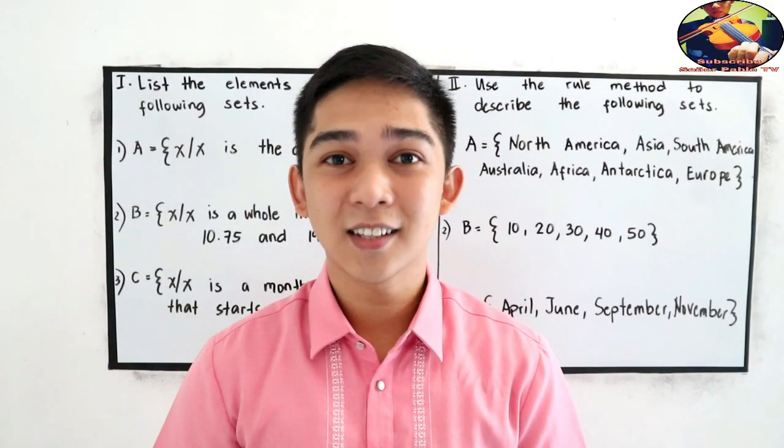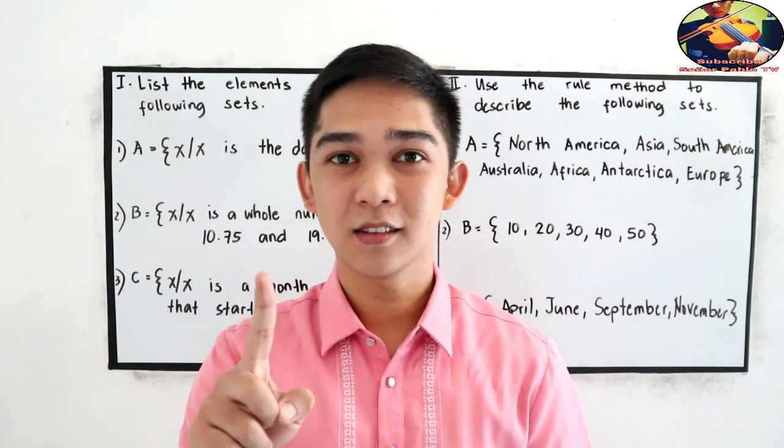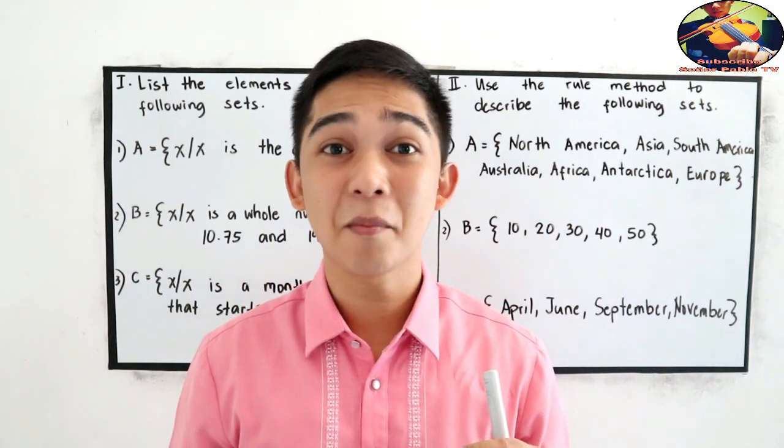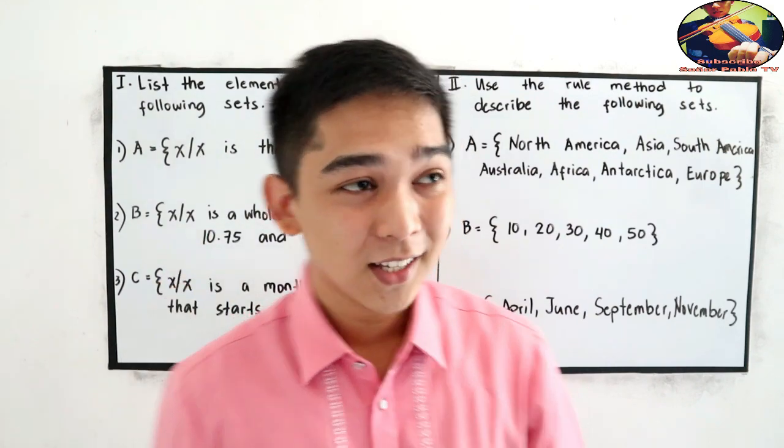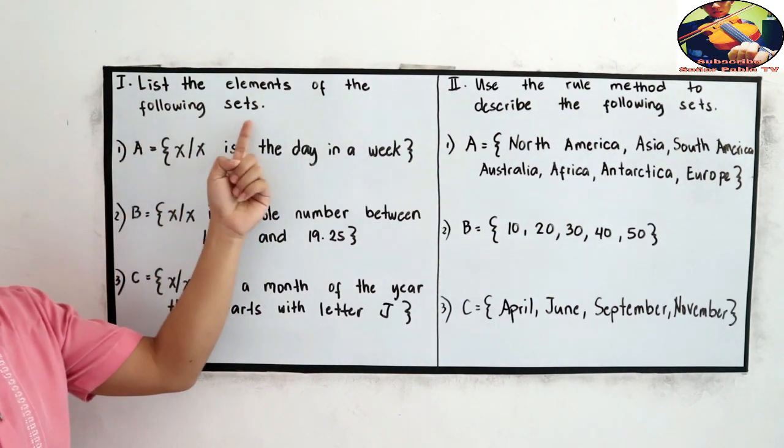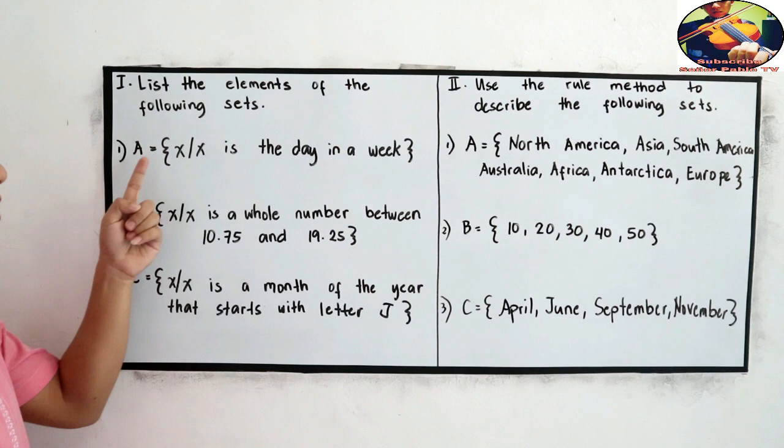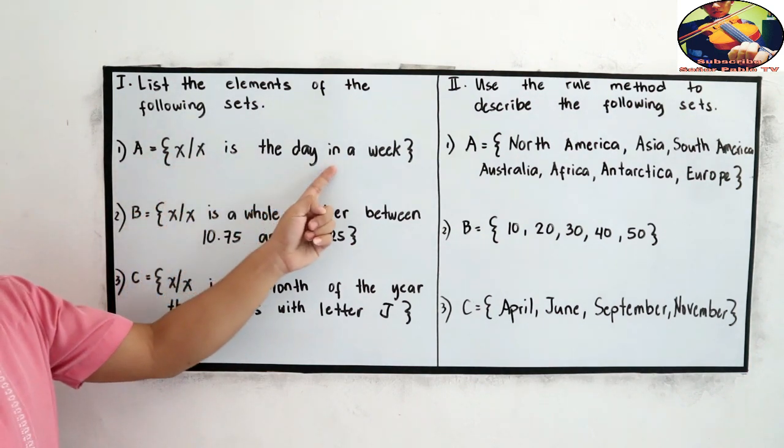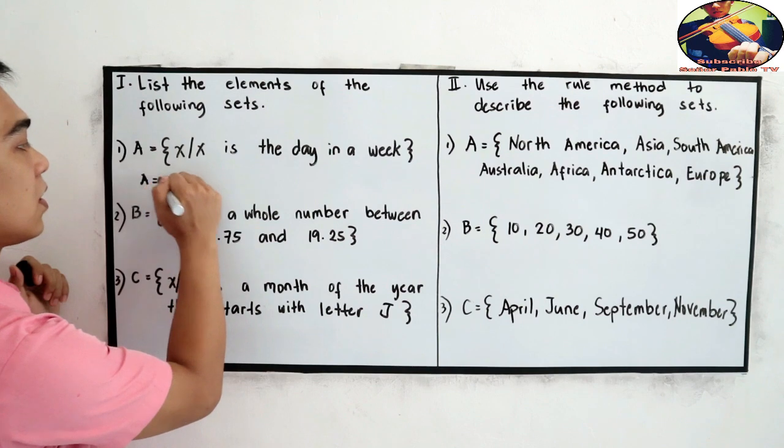Now, to further understand let's have some examples. I will answer number 1 for part 1 and part 2 then you will answer the remaining exercises, the number 2 and number 3. So, for test 1 for the part 1 list the elements of the following sets. I will answer number 1, set A is equal to x such that x is the day in a week.